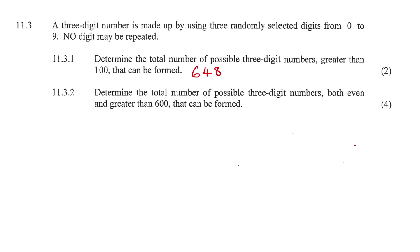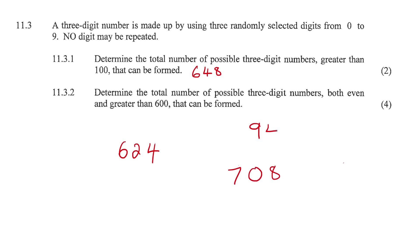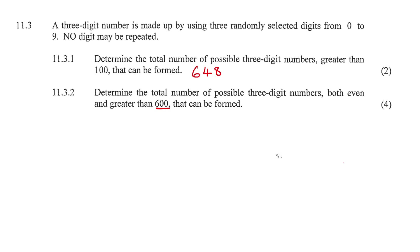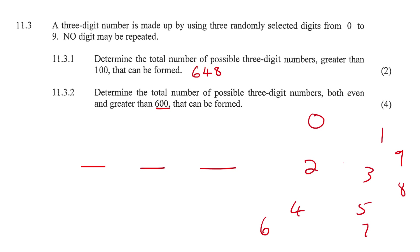The second question: determine the total number of possible three-digit numbers that are both even and greater than 600. So codes like 624, 708, or 946. Notice that the last digit must be even for the whole number to be even, and the first digit must be six or more so that the number is larger than 600. Those are our two restrictions across the three positions.